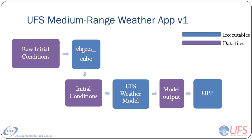This app consists of three components: preprocessing, forecast model, and post-processing. The preprocessing component is called ChangeResCube. It ingests raw initial conditions that describe the state of the atmosphere, land, oceans, and sea ice, and outputs initial condition files that are ready for use by the UFS weather model.